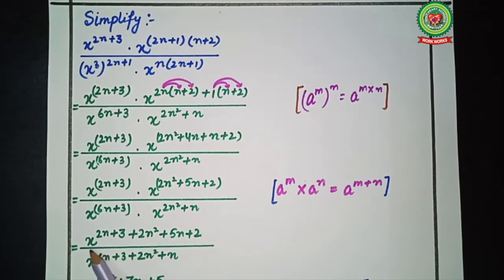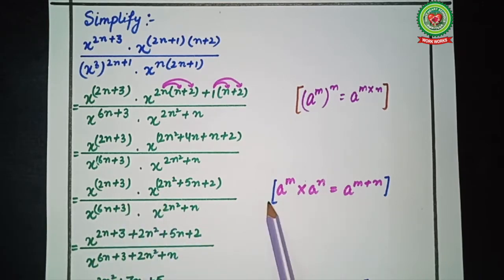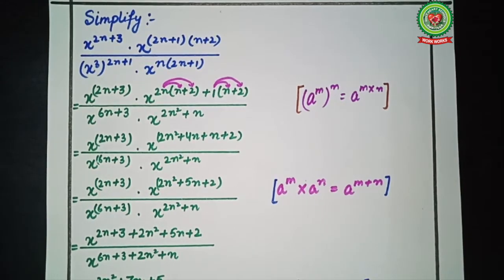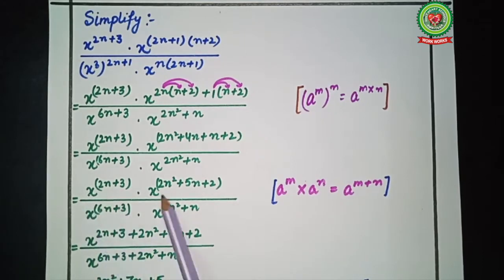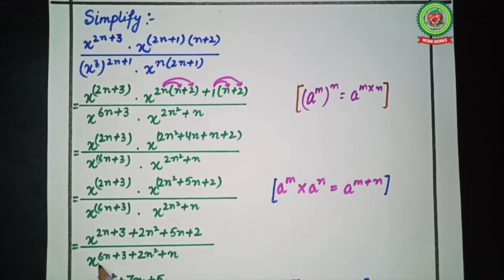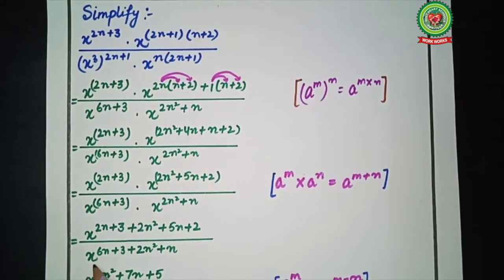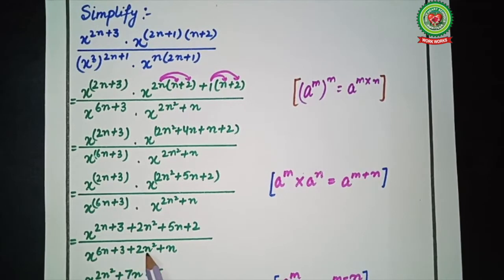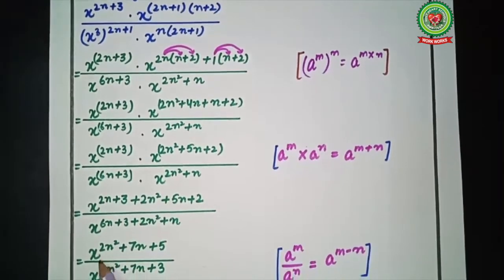In the next step we apply the rule: a raised to power n multiplied by a raised to power n equals a raised to power n plus n. We apply this because the bases are the same and they are being multiplied, so their powers will be added. So we add the powers: x raised to power 2n plus 3 plus 2n squared plus 5n plus 2 in the numerator, and x raised to power 6n plus 3 plus 2n squared plus n in the denominator.